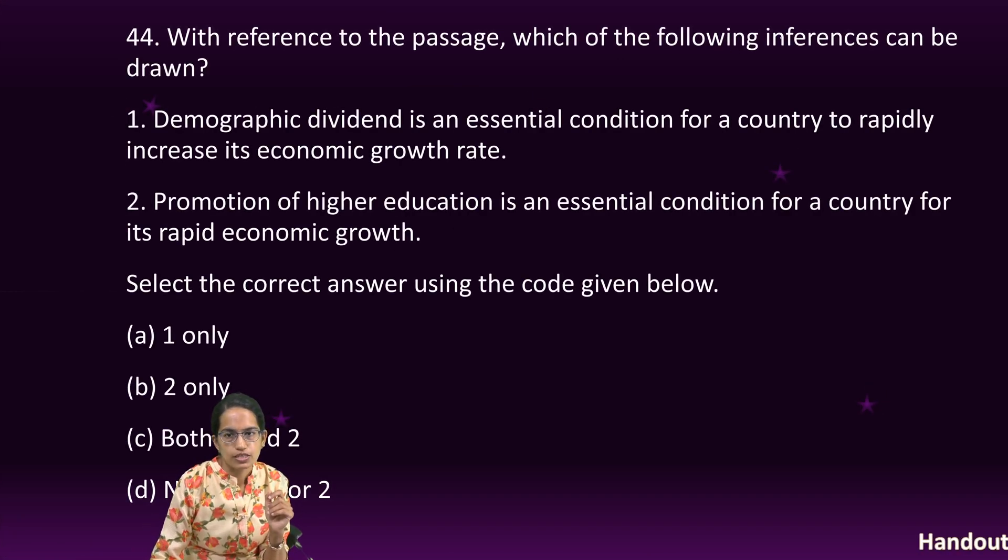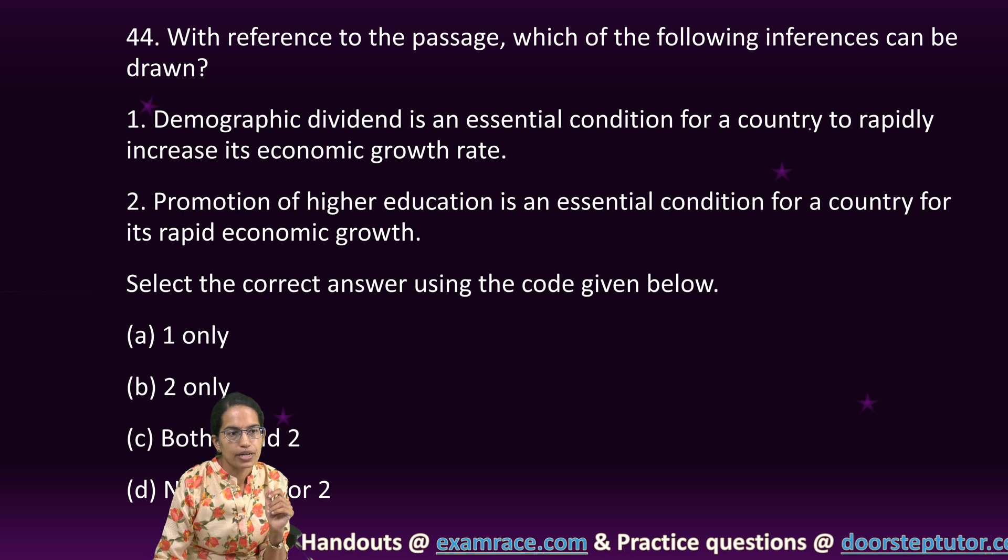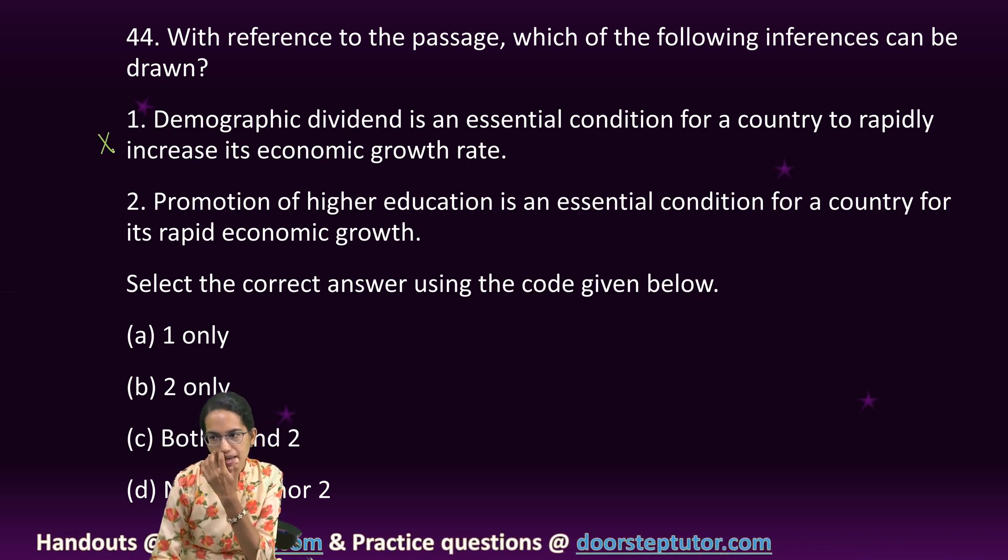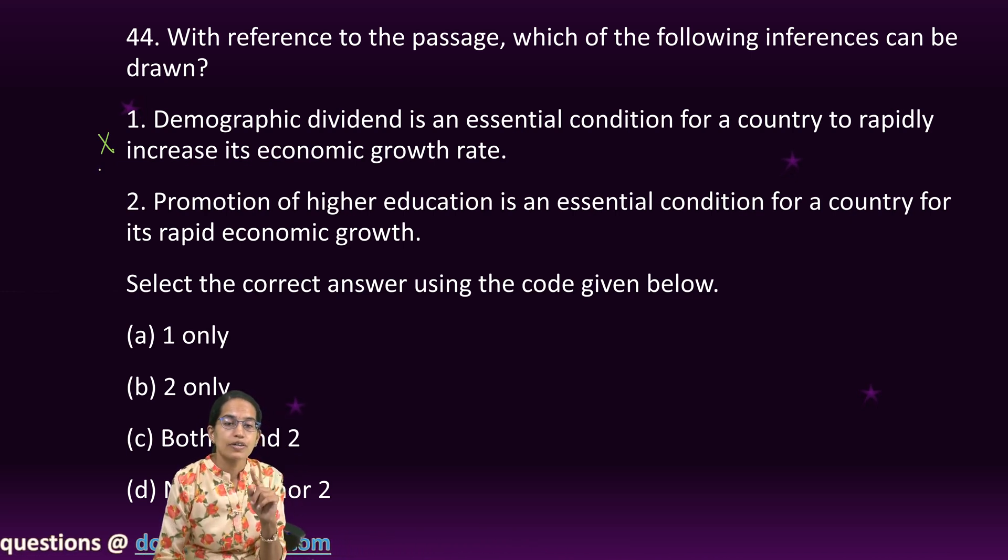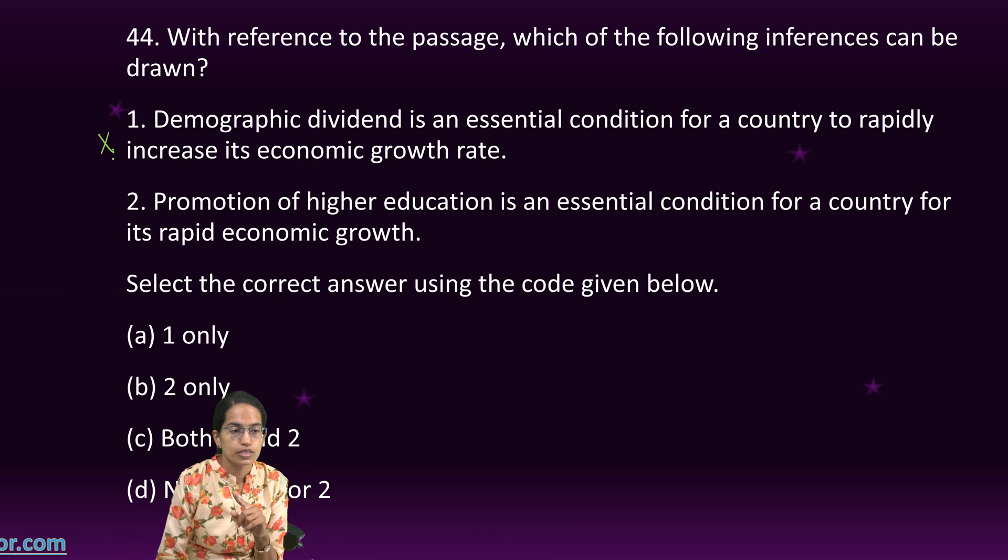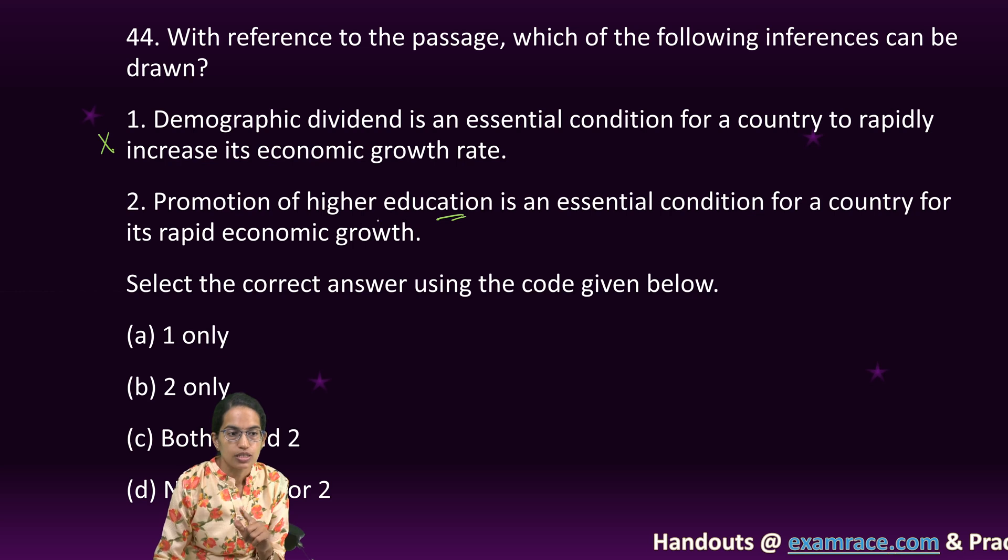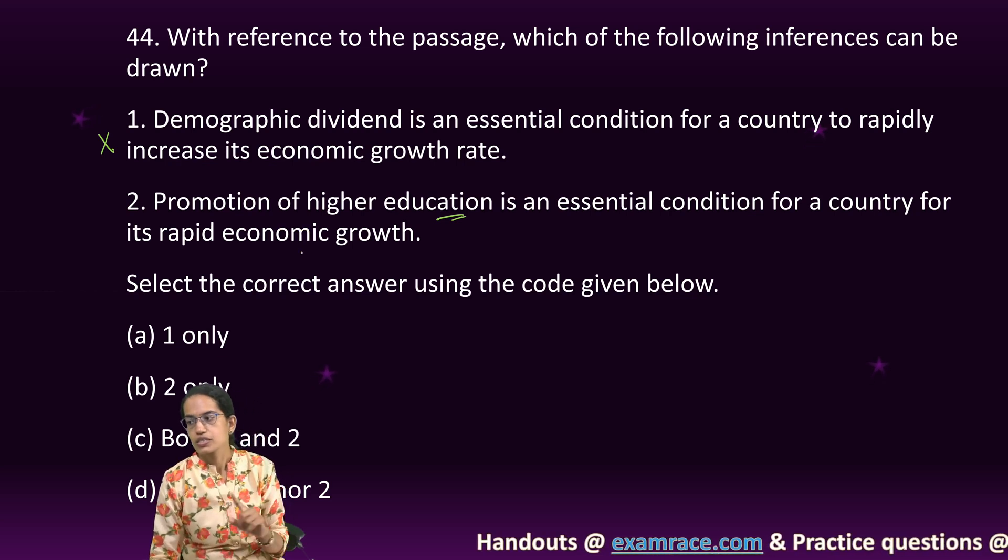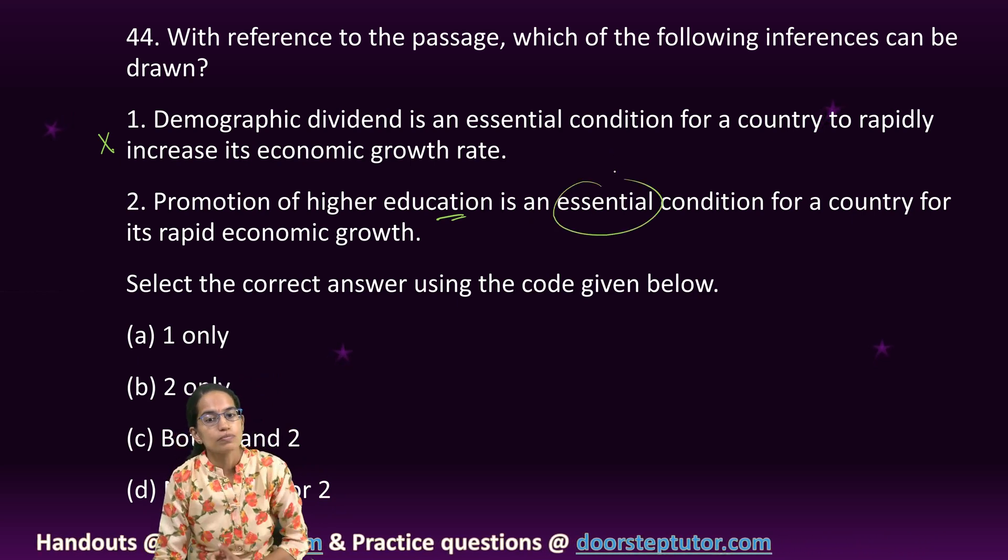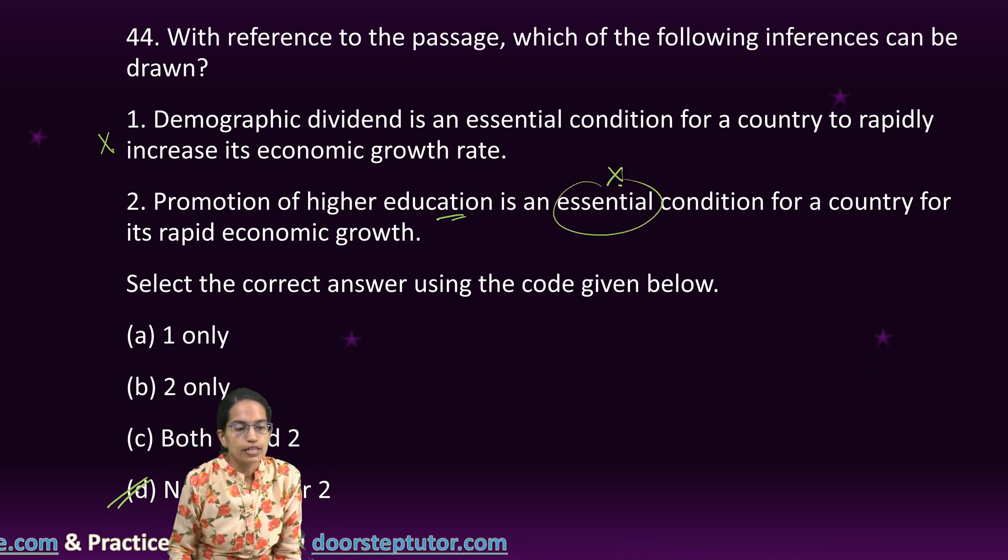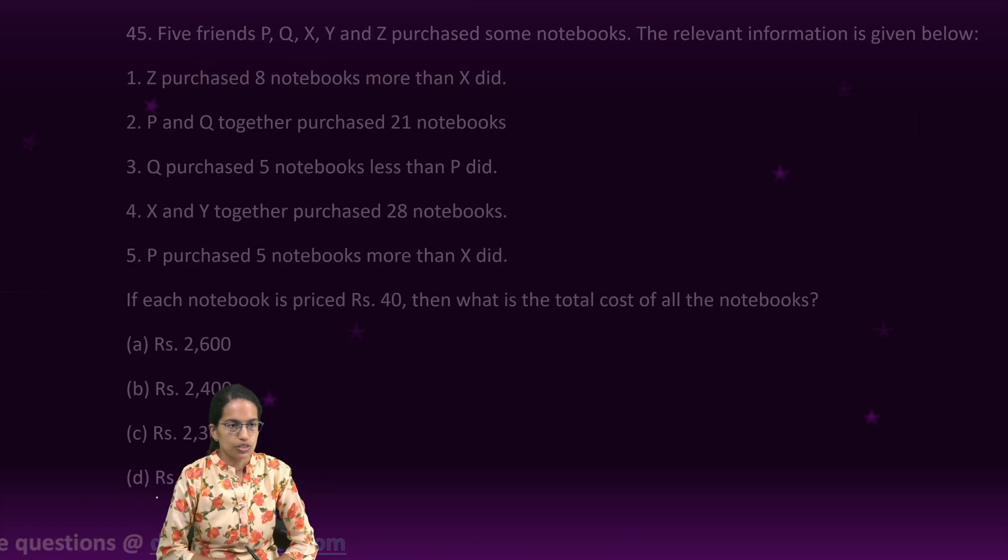The next is with reference to passage, which one of the following inferences can be drawn? Demographic dividend is essential condition for a country to rapidly increase the economic growth. No, the passage does not say so. It simply says that the benefit would be worked out only when we have quality working age population. And it does not say that it is essential condition. So neither of 1 and 2 are the right options for this question.